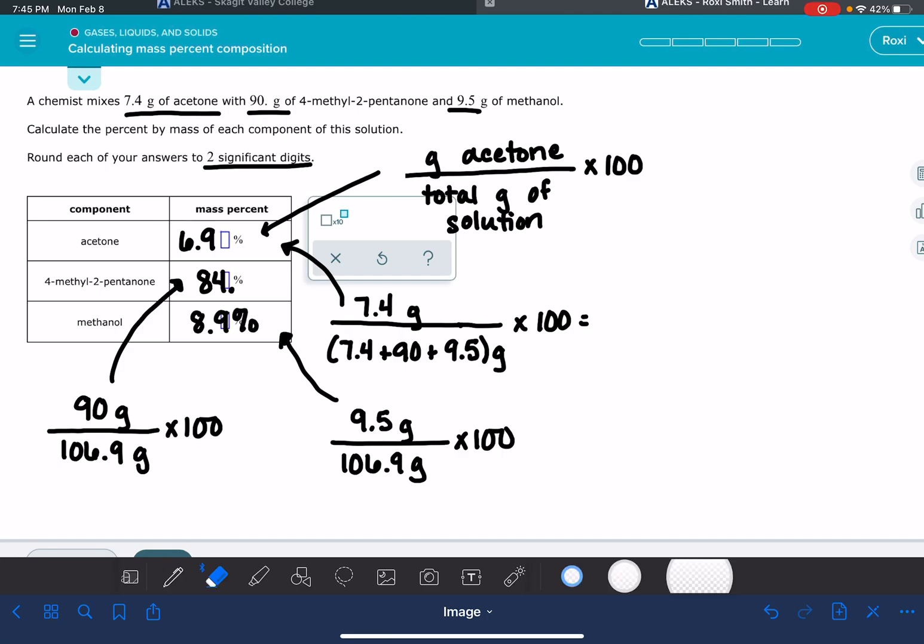You can double check your work by making sure that they all add up to 100. So all three of these numbers right here, if you add them all up, they should add up to 100%. When I add them up, they add up to 99.8. And that has to do with the decimal places that are in each one of the answers, but that is definitely close enough to 100. So this is correct.